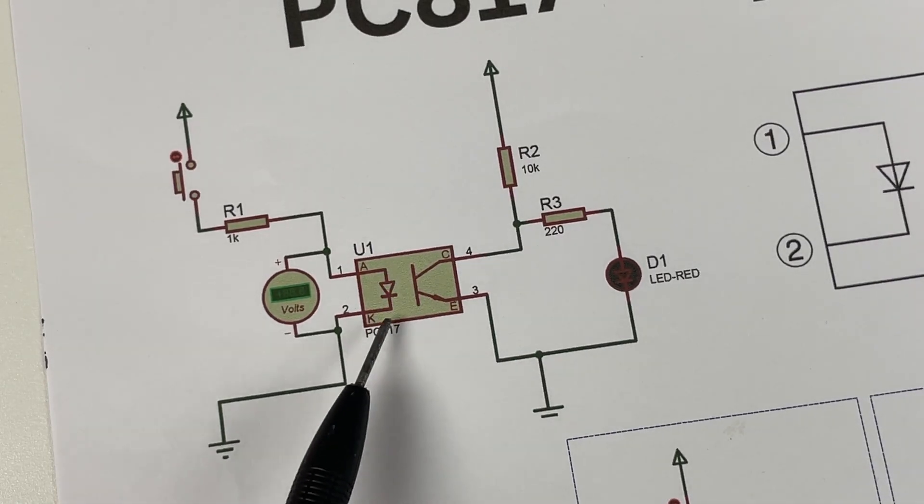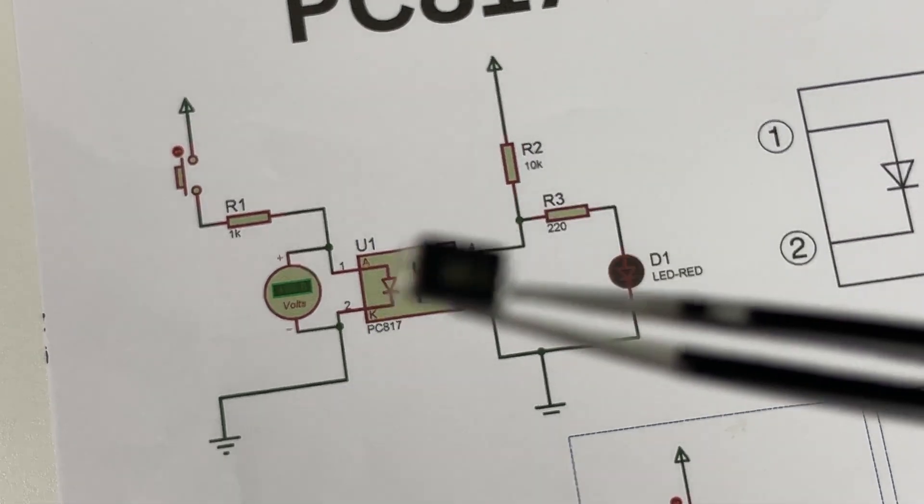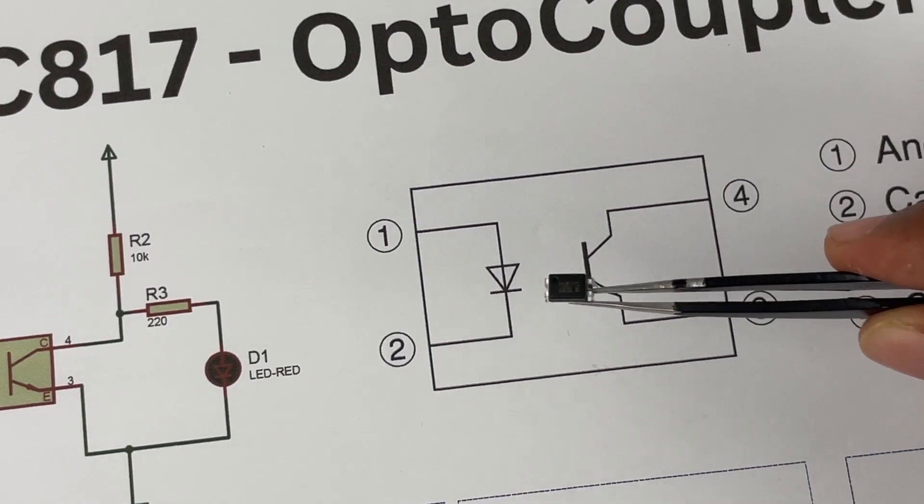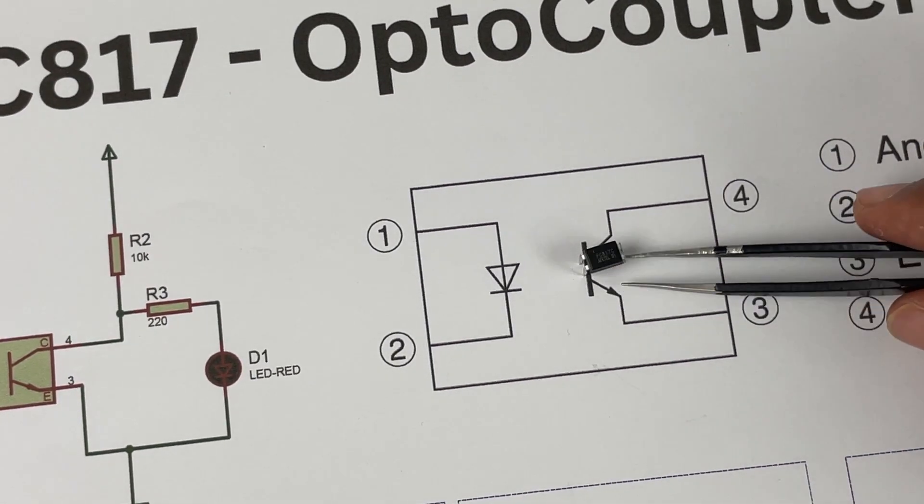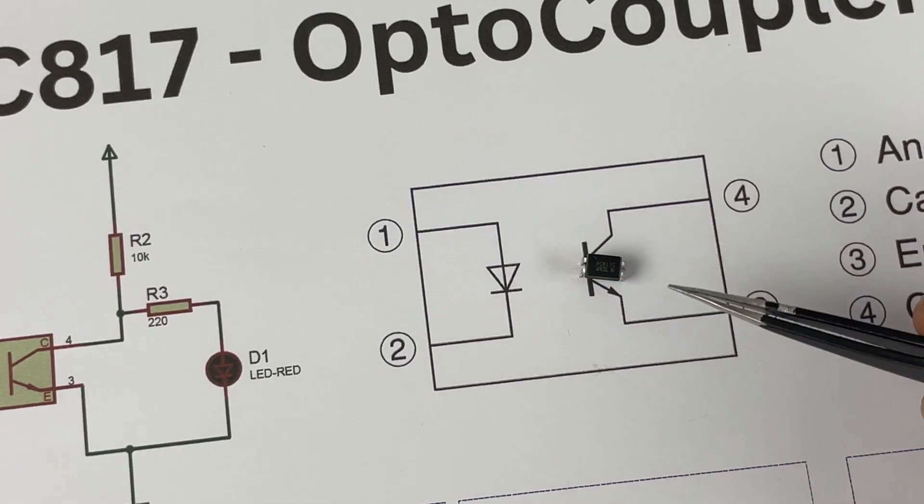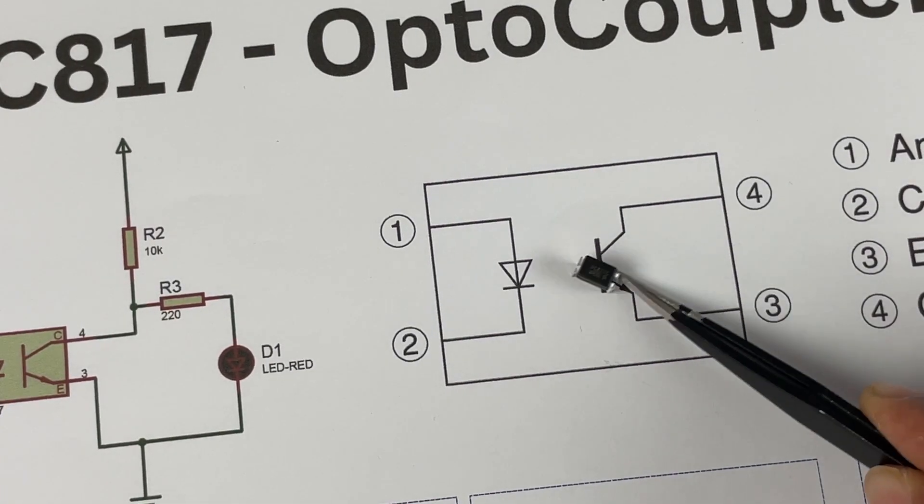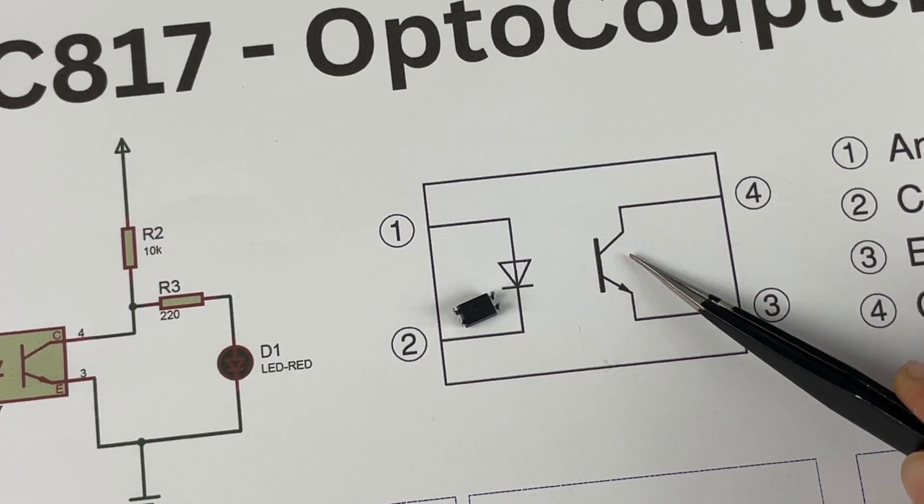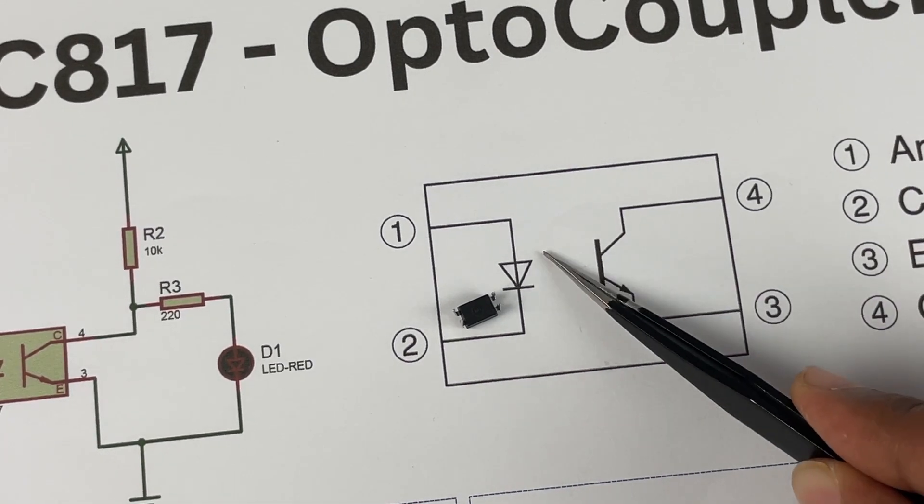Now the optocoupler in discussion here is the popular PC817 and as you can see here inside this optocoupler IC we have an LED and a transistor. This is a special type of transistor without any base pin. So this transistor turns on when there is light coming from this diode.